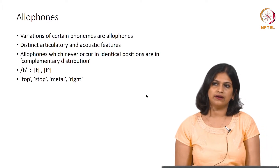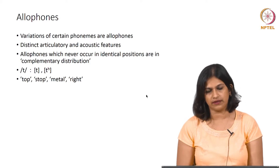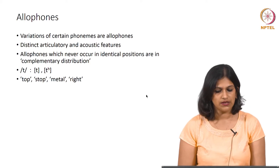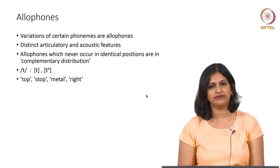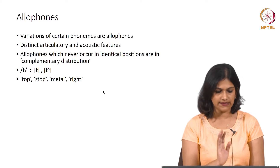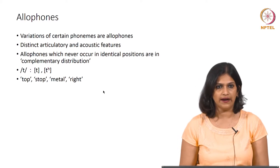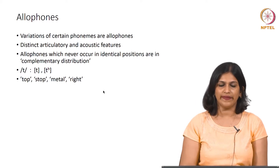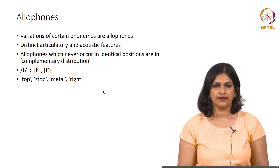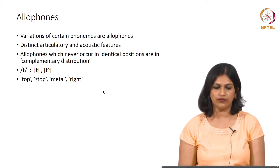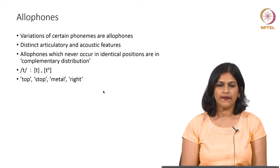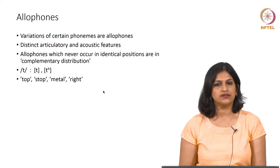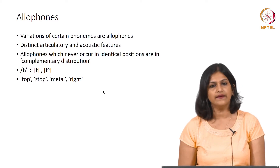Now another interesting thing about phonemes or phonology in a broader sense — we have to understand a new discipline-specific jargon: allophones. Until we understand allophones, it will be tricky to understand phonetic typology or phonological typology. Allophones are variations of certain phonemes. If one phoneme can be represented in two different ways when occurring in different parts of a word, then those variants are known as allophones — they also have distinct articulatory and acoustic features.